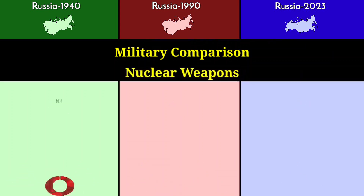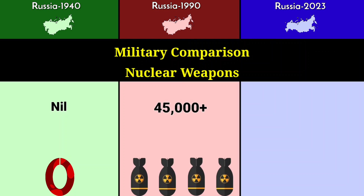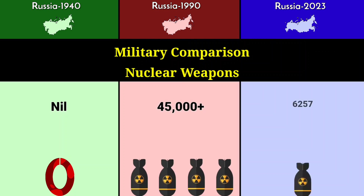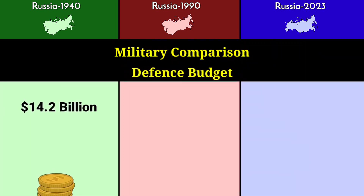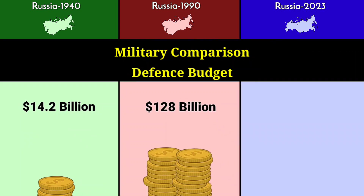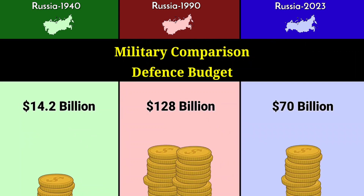Nuclear weapons: 0 in 1940, more than 45,000 in 1990, and 6,257 in 2023. Defense budget: 14.2 billion dollars in 1940, 128 billion dollars in 1990, and 70 billion dollars in 2023.